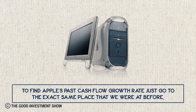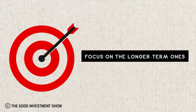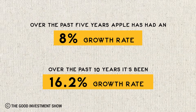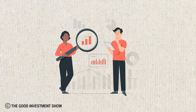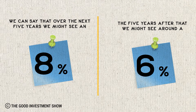To find Apple's past cash flow growth rate, go to the same place on Guru Focus. Over the past five years, Apple has had an 8% growth rate, and over the past 10 years, it's been 16.2%. If we look at the growth rate in earnings per share, it's around the same figures. So in the future, we can say that over the next five years we might see an 8% growth rate, and the five years after that, around 6% growth.